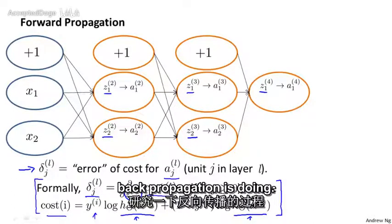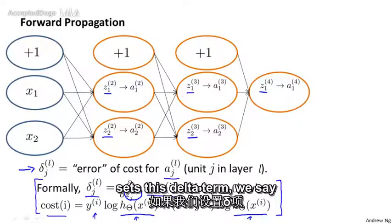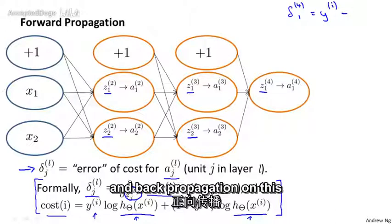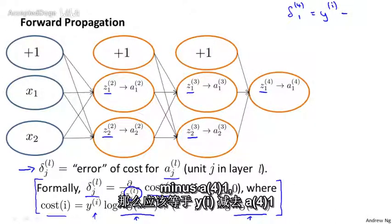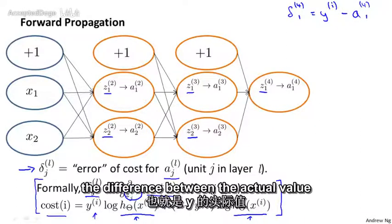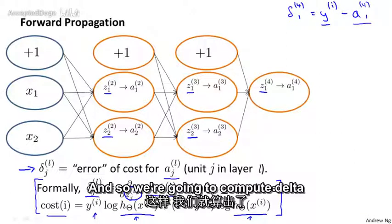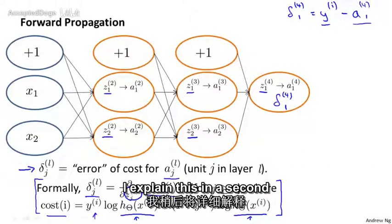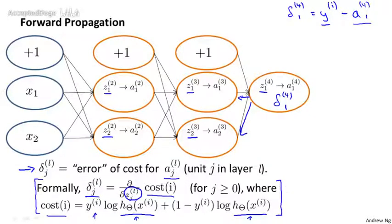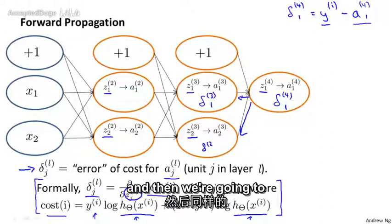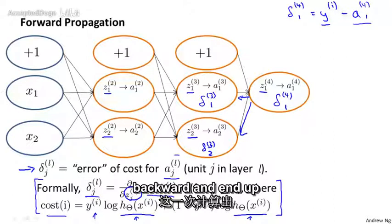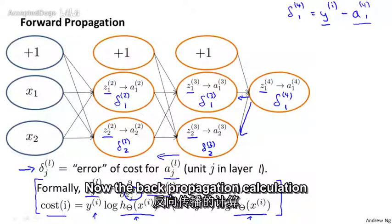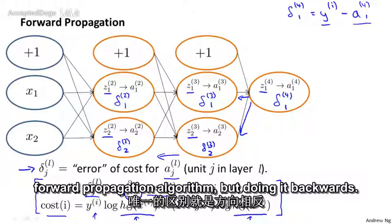Let's look in more detail at what backpropagation is doing. For the output layer, it first sets delta 4, 1 equal to yi minus a4, 1. So this is really the error — the difference between the actual value of y minus what was predicted. We then propagate these values backwards and compute the delta terms of the previous layer, ending up with delta 3, 1 and delta 3, 2. Then we propagate further backwards to compute delta 2, 1 and delta 2, 2. The backpropagation calculation is a lot like running the forward propagation algorithm but doing it backwards.